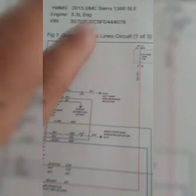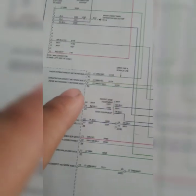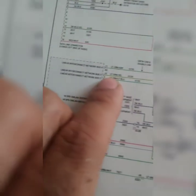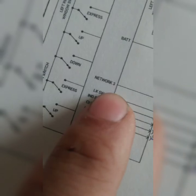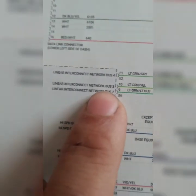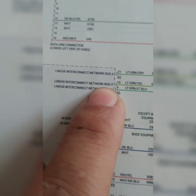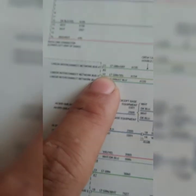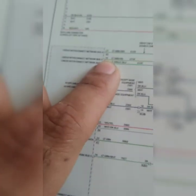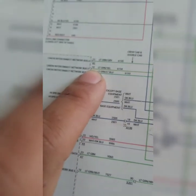So when we go through our next schematic over here, our computer data line circuit, one out of five. It's five schematics just for these data lines. So we go from here, we follow like green yellow. Again, as we saw on the last schematic, it is called network three. So we got to find network three over here. Boom, network bus three, linear interconnect.